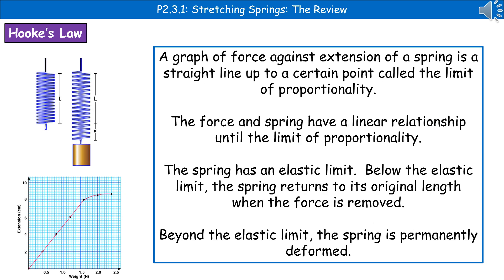If we consider what happens when we have a spring and we stretch it, then what we see is something known as Hooke's Law. If we plot a graph of our results, as I've done in the bottom left there, then when we have a graph of force against extension, we have a straight line that goes up to a certain point. That point is called the limit of proportionality, and that initial part of the graph is a nice straight line — a linear relationship.